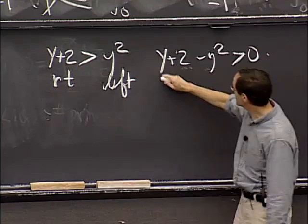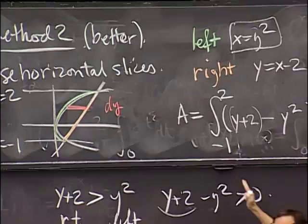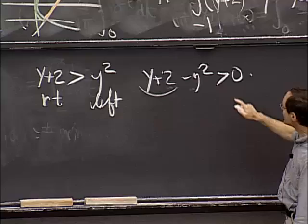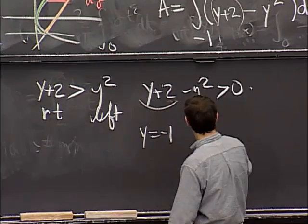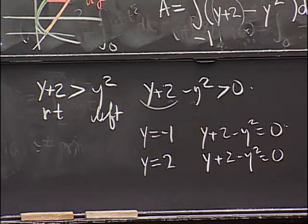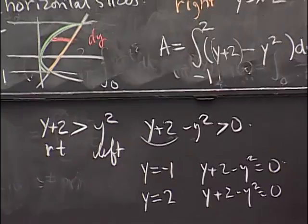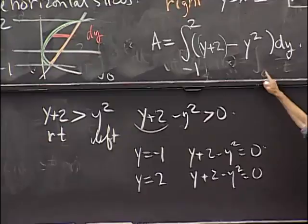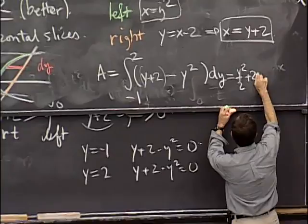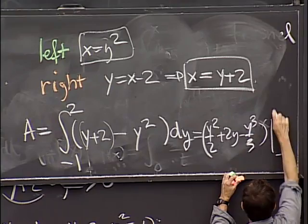At the endpoints y equals negative 1 and y equals 2, the quantity y plus 2 minus y squared equals 0 — that's exactly where the curves cross, which confirms our setup. This is a much more routine integral. Evaluating: the antiderivative is y squared over 2 plus 2y minus y cubed over 3, evaluated from negative 1 to 2. Working it out gives 9 halves. So the area between the two curves is 9 over 2. We're done for today, and tomorrow we'll do more volumes and things including three dimensions.